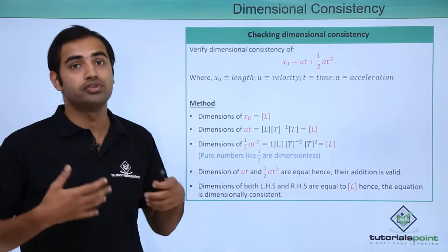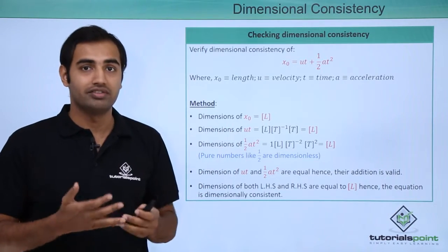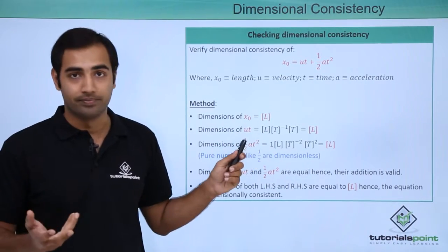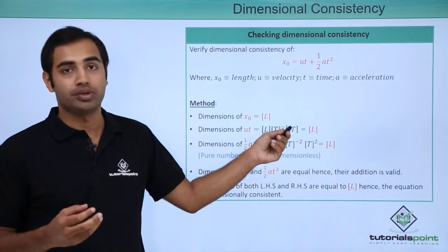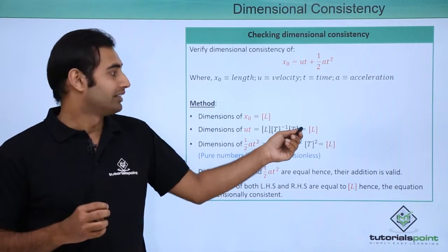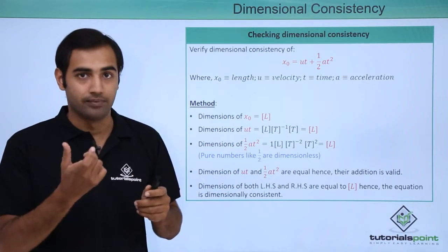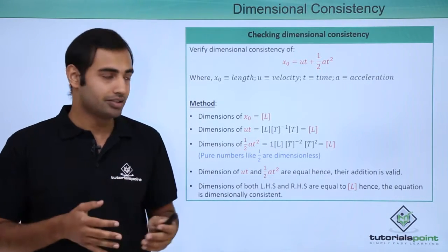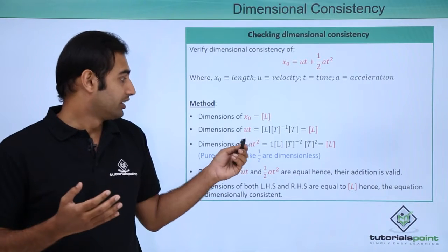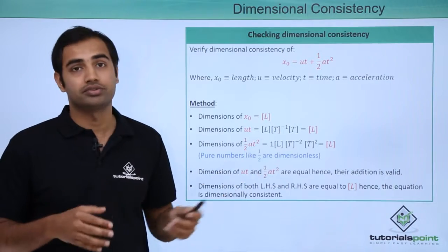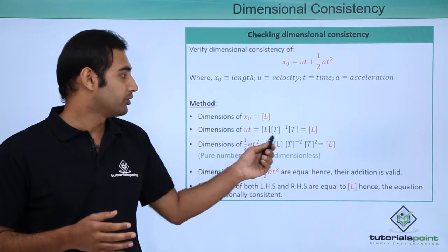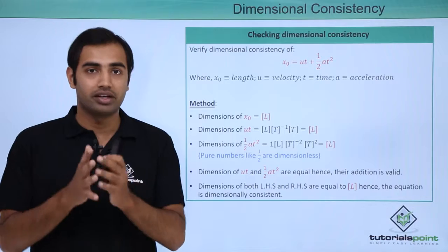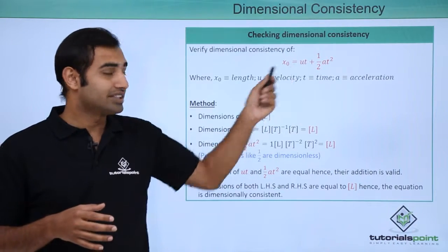Finding the dimensions of u times t: u is velocity which is LT⁻¹, multiplied by t which is T. T⁻¹ and T cancel out giving T⁰, so the result is L. The dimensions of ut combined is L. Next, for ½at²: pure numbers are dimensionless, so the dimension of half is 1. The dimension of a is LT⁻², multiplied by t² which is T², giving a dimension of L. So ut and ½at² have the same dimensions - this addition is totally valid.